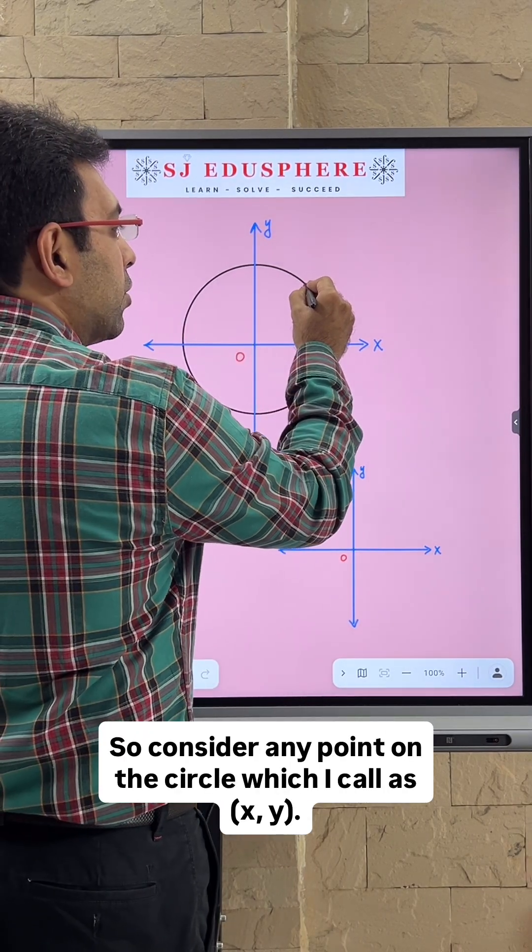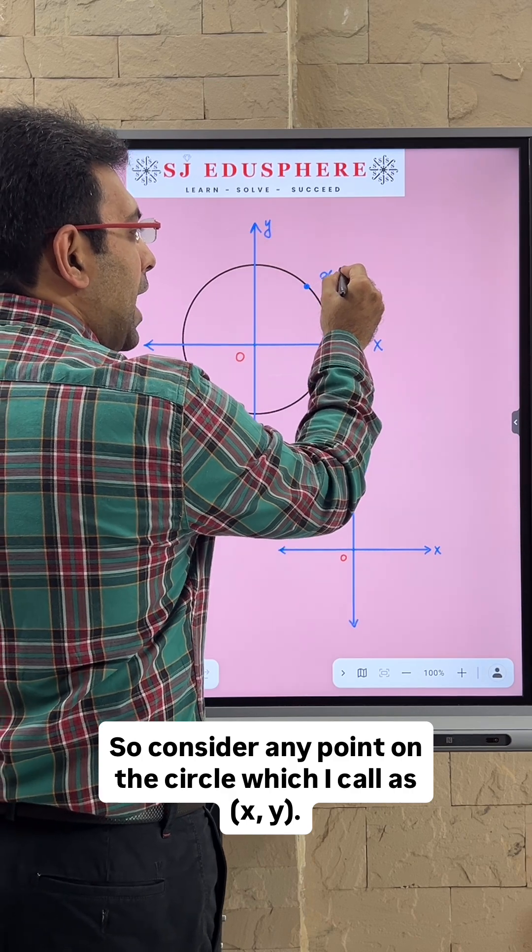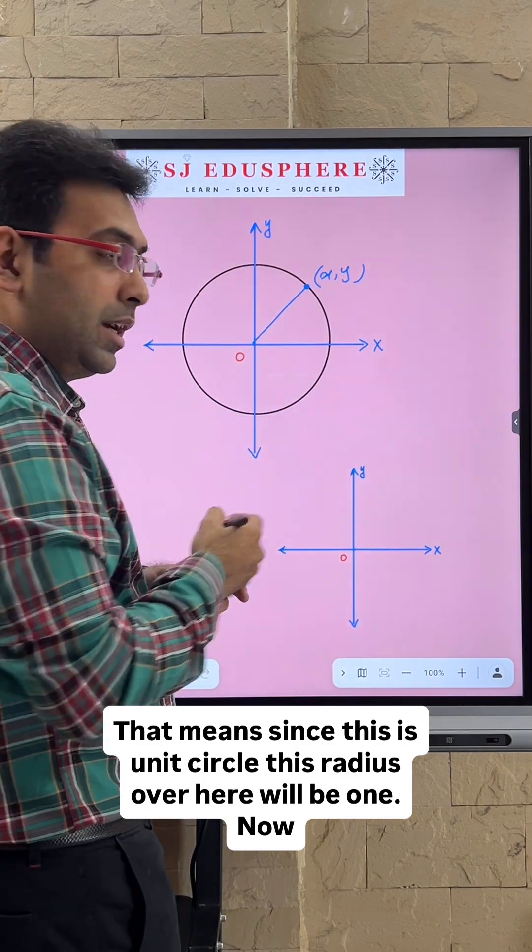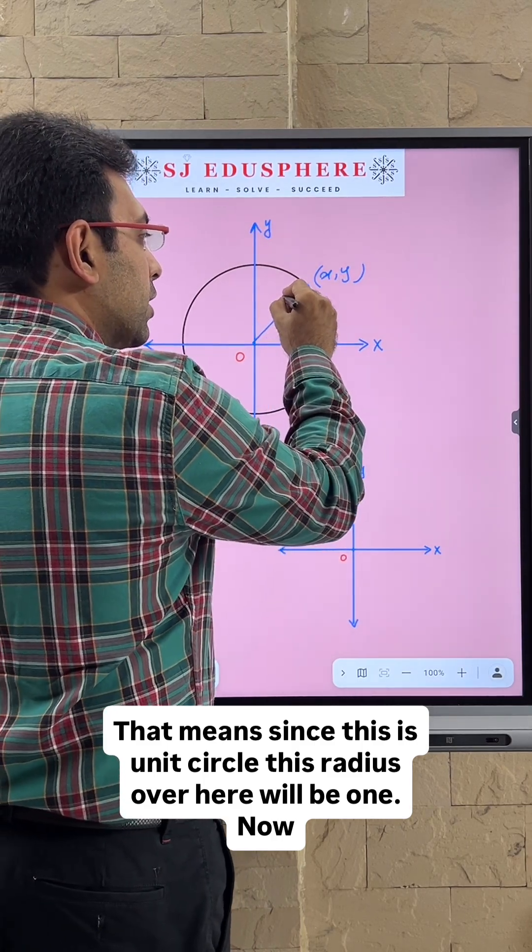Consider any point on the circle which I call x, y. That means since this is a unit circle, this radius over here will be 1.